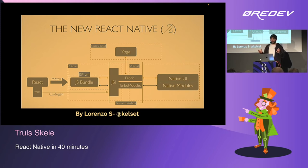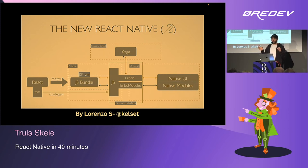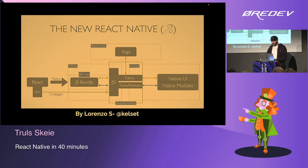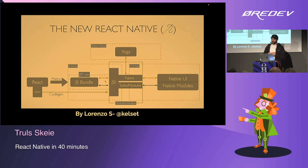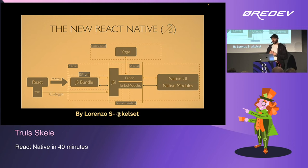Because everything is written in C++, you can take those components and put them anywhere that runs C++, and get the benefits of React Native out of the box. Yoga is also now written in C++, so all the optimizations done on Android and iOS are available by default for everyone. And since this is in C++, communication between the JavaScript side and the native side is now synchronous.